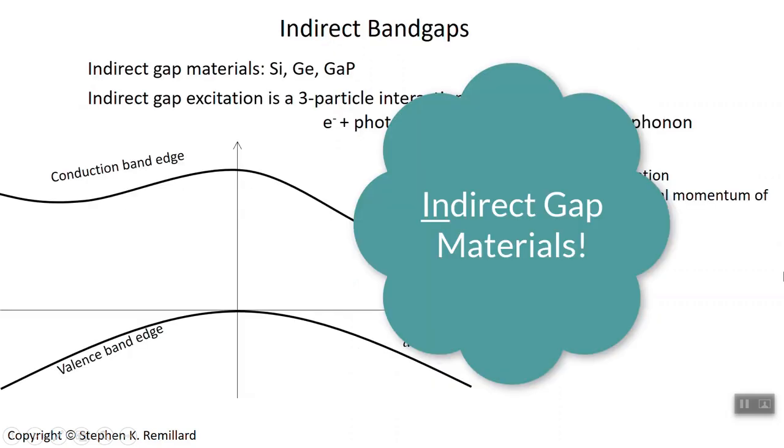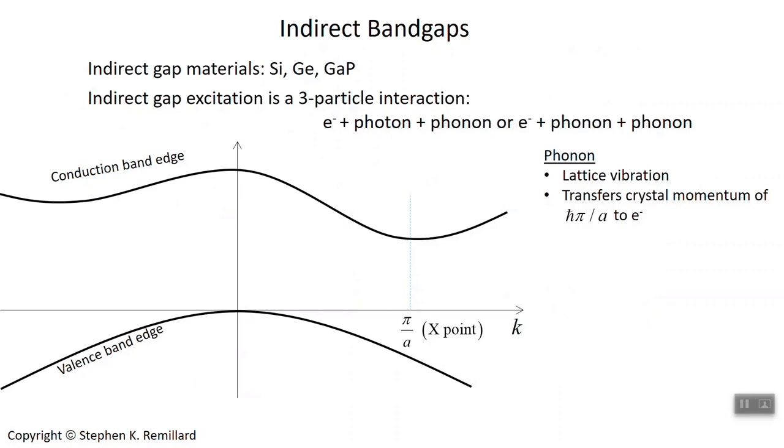Materials include silicon, germanium, gallium phosphide, several others. I've attempted to qualitatively reproduce the band diagram for silicon. Valence band edge is shown at a peak. This is apparently the gamma point. And the conduction band edge has its minimum over here at the X point in K-space.